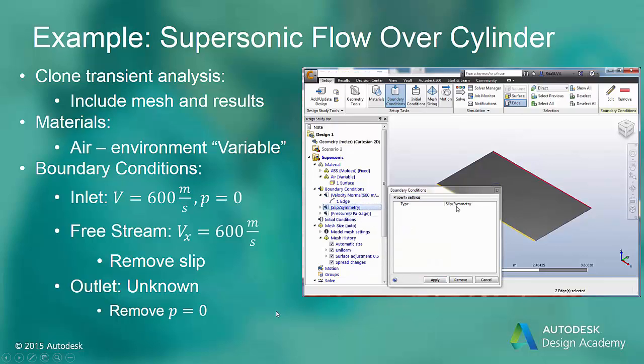At the free stream, the slip symmetry is no longer valid because shockwaves could cross this boundary. The most numerically stable boundary condition at the free stream is going to be to set the velocity there. We'll have to set it by components since the normal velocity is not the direction of the flow. So we'll set the Vx component equal to that same 600 meters per second.